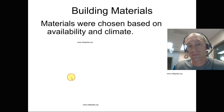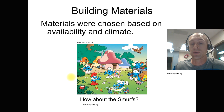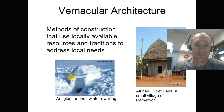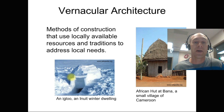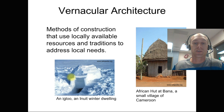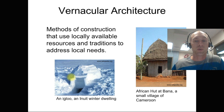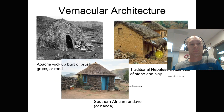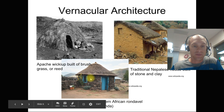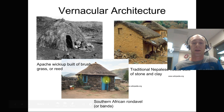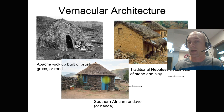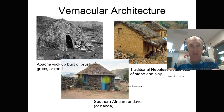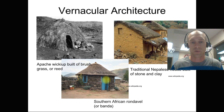Vernacular architecture is a method of construction that uses locally available resources and traditions to address local needs — basically just using what is locally available. Examples include an Apache structure built with grasses, a Nepalese house using stone and clay, stone buildings in Africa, and in the American plains, where there were no forests, settlers would cut sod blocks and stack them to build homes.